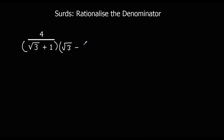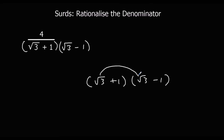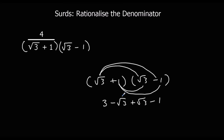If I times it by root 3 minus 1 — the same thing but with a negative sign — what happens is the middle bit cancels. So root 3 plus 1 times root 3 minus 1: root 3 times root 3 is 3, root 3 times minus 1 is minus root 3, 1 times root 3 is root 3, and 1 times minus 1 is minus 1. These two middle bits — minus root 3 plus root 3 — cancel out to give 0. So it's just 3 minus 1, which is 2. There's no surd left on the bottom — that's what we want. So we use this trick: difference of two squares. If the denominator has a minus, we times by the same with a plus; if it's a plus, we times by the same with a minus.